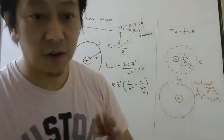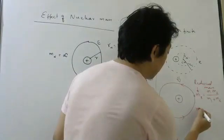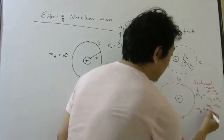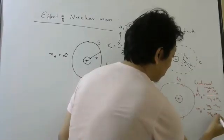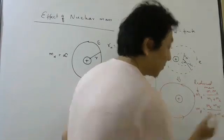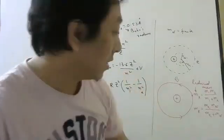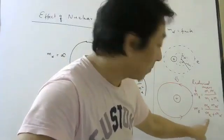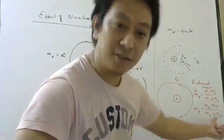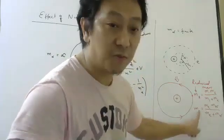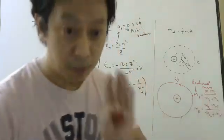So that will be equal to M1, M2 by M1 plus M2. So that is called your reduced mass which in this case will be mass of electron, mass of nucleus, mass of electron plus mass of nucleus. Now, you can see students that generally nucleus is very heavy. So mass of electron plus mass of nucleus, you can simply write mass of nucleus. So mass of nucleus will cancel. So reduced mass will be mass of electron usually.